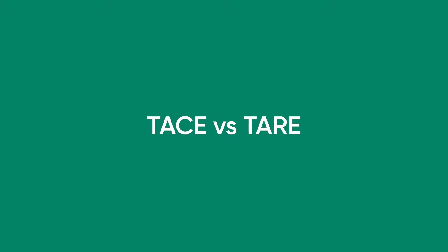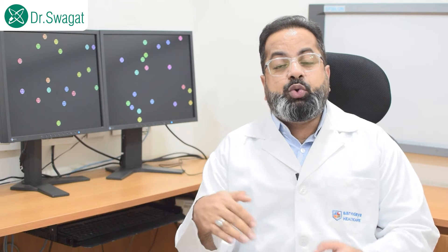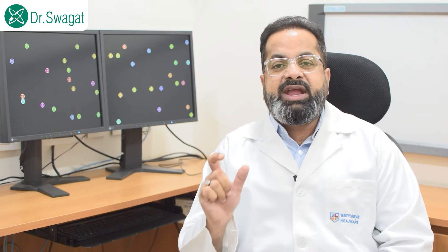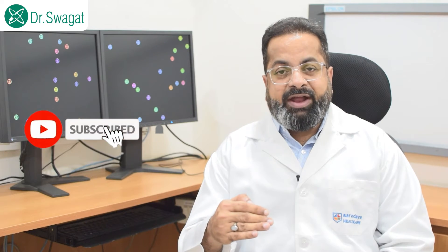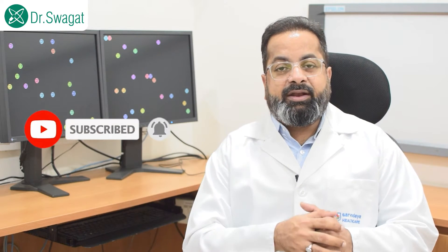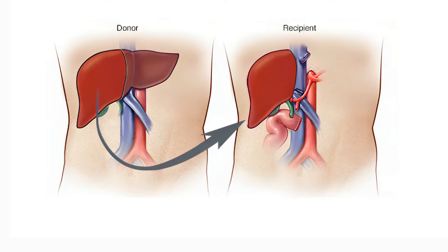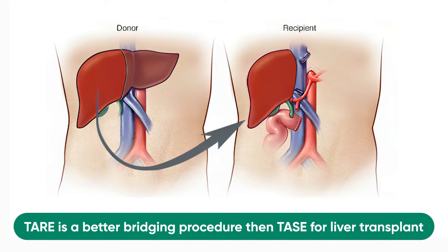But when you compare TACE versus TARE head-on, there are certain advantages of TARE. The time to disease progression with TARE is more than with TACE — after TACE, the median time when the disease progresses is almost 8 months, whereas in case of TARE it is more than one year. The side effect profile: side effects are more with TACE and less with TARE. Tumor shrinkage effect — which is what we are trying to achieve — is more with TARE and less with TACE. And when planning for future transplant, TARE is a better bridging procedure than TACE.